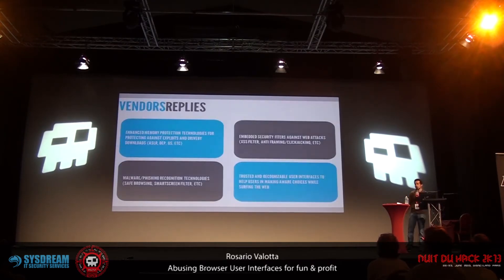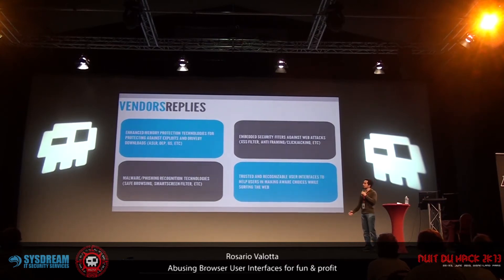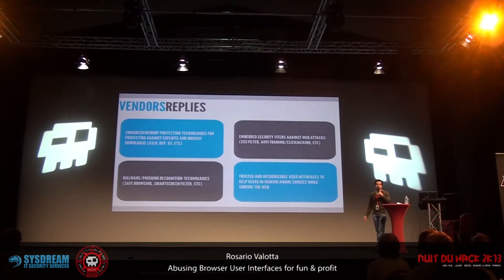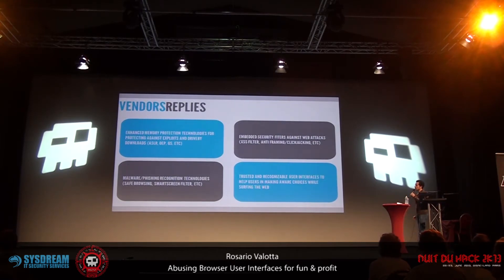That's why, in the latest years, browser vendors invested a lot of money and effort into building new protection technologies and making existing ones more robust. We are talking about protection from memory corruption exploits — for instance, ASLR, DEP, GS — protection against web attacks such as XSS filters and anti-framing technologies, and protection against malware or phishing through technologies like Safe Browsing and Smart Screen Filter.